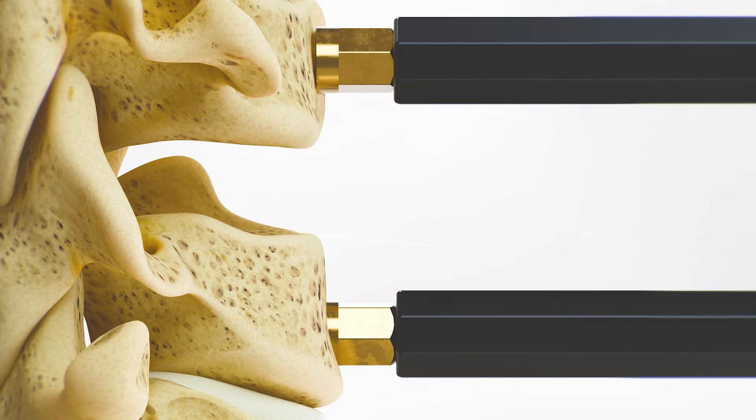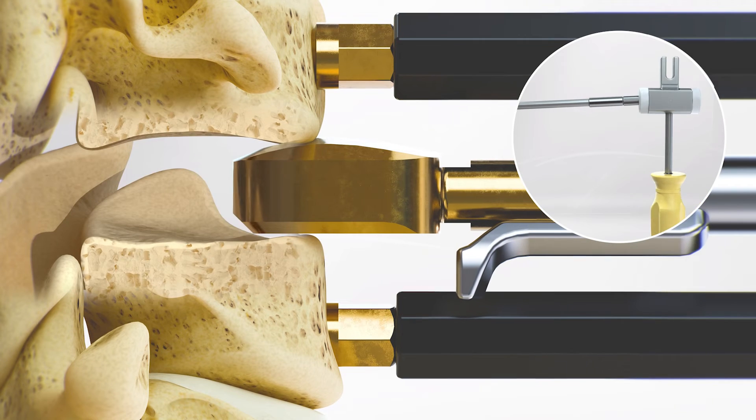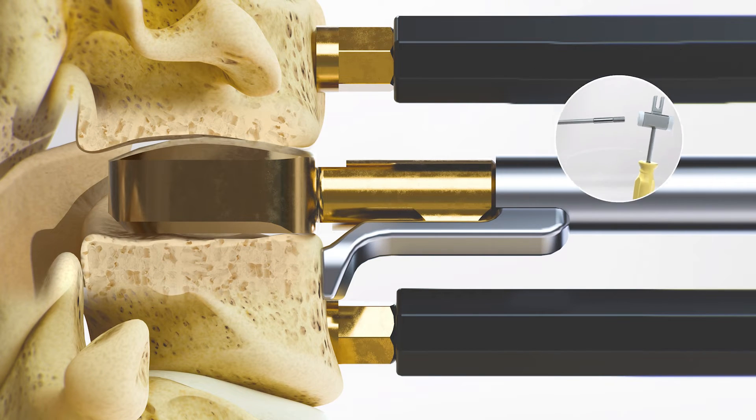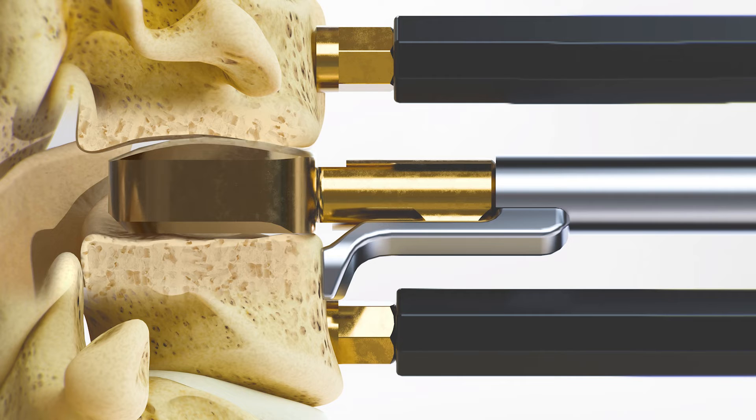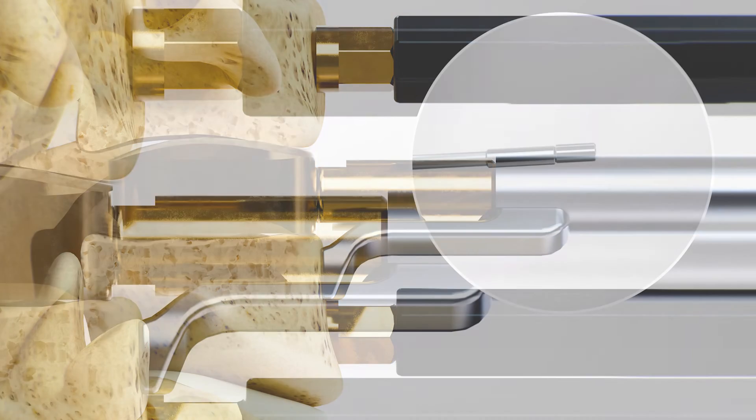Following discectomy, decompression, and remobilization, a trial is used to assess the implant size and position. It is recommended to use the largest footprint and shortest height implant positioned to the posterior margin of the disc space.